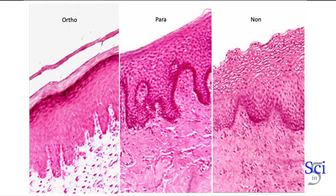The non-keratinized has something different — there's a very thin layer, you can barely see anything happening. It seems very superficial, and as you probably guessed, it's named the stratum superficiali. So you can easily remember: non-keratinized has a superficial layer, or stratum superficiali. It has nuclei and organelles, but the big difference is there's no keratin.